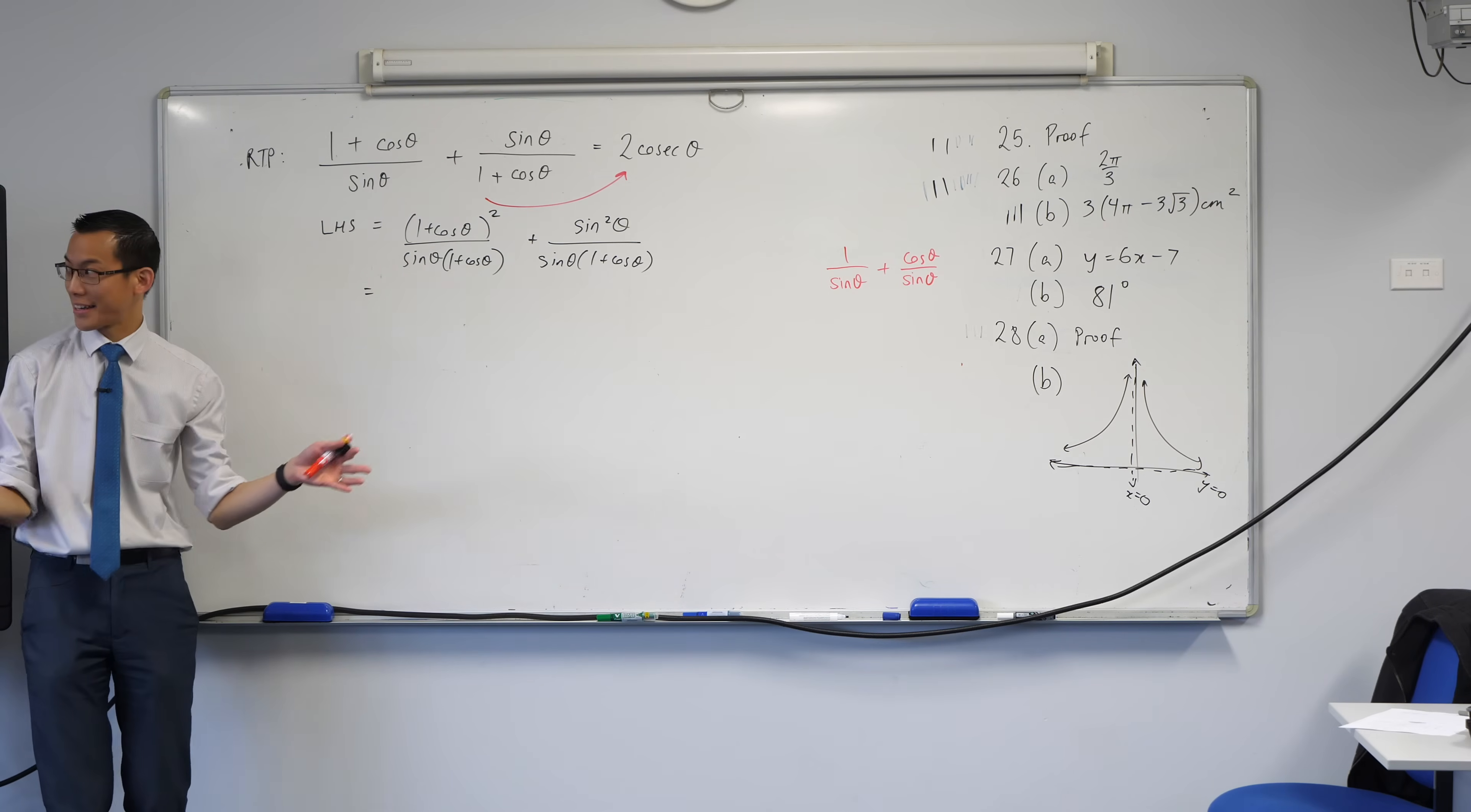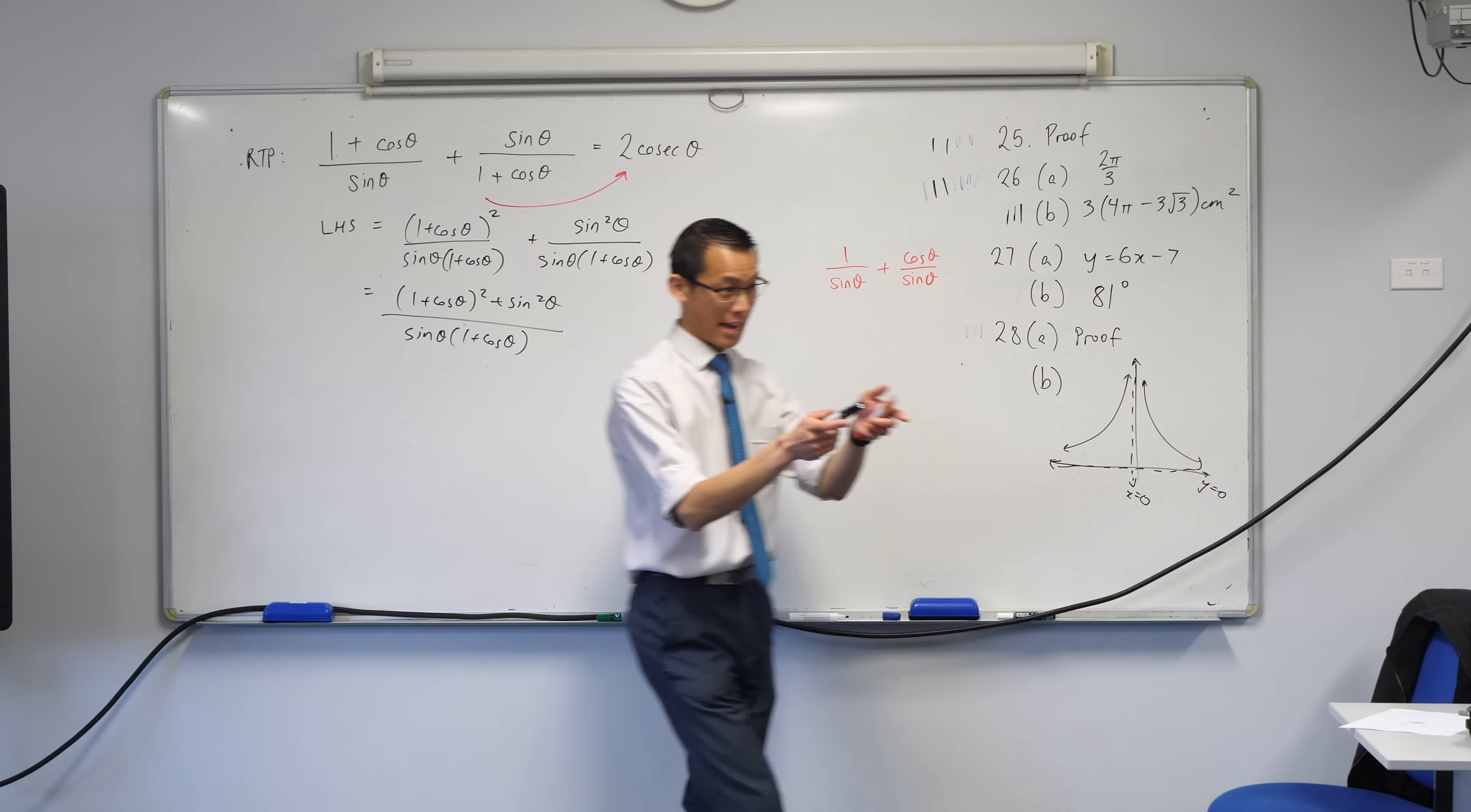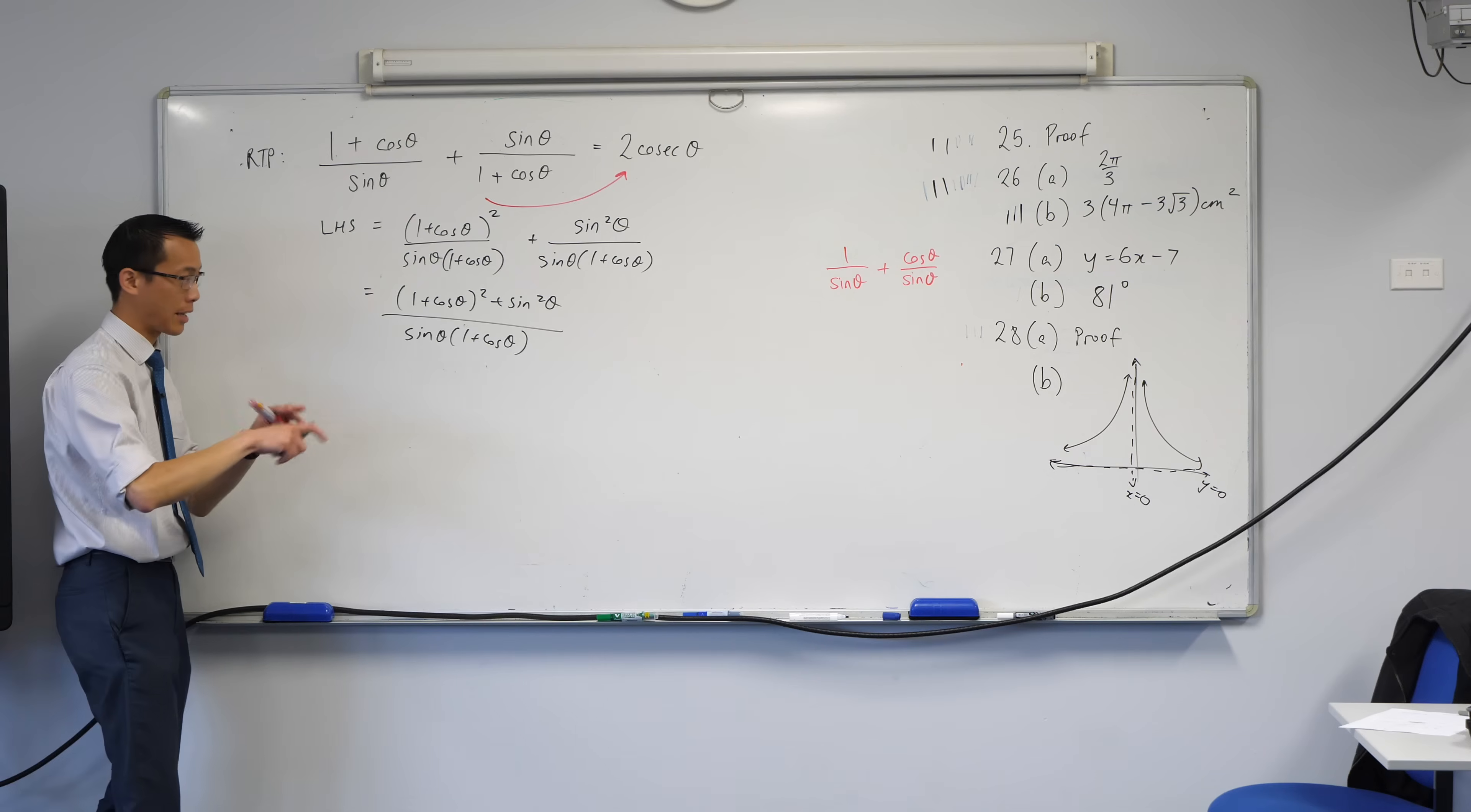So the whole point of having a common denominator is I can now combine these two fractions into one. So that gives me 1 plus cos theta all squared plus sine squared all over this rather long and messy denominator. Okay, let me pause. Question. Is that where you're going to turn sine squared theta into cos minus 1 minus cos theta? So I am definitely going to be, if you think back to yesterday's lesson, I am definitely going to be using what we call the Pythagorean identity.